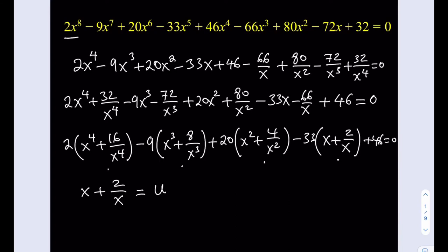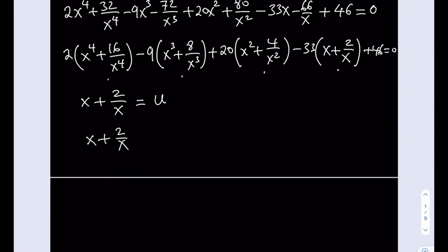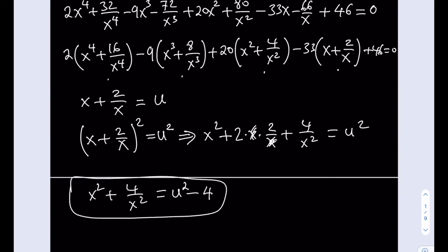We're going to call x plus 2 over x something — let's call that u. Now, how do we get other terms from here? For example, I have x squared plus 4 over x squared. So if I go ahead and square x plus 2 over x, I should be getting u squared. Squaring gives x squared plus 2 times x times 2 over x plus 4 over x squared equals u squared. The x cancels out, and we end up with x squared plus 4 over x squared plus 4 equals u squared. So subtracting 4 from both sides: x squared plus 4 over x squared equals u squared minus 4.